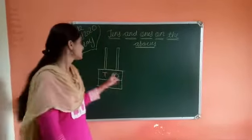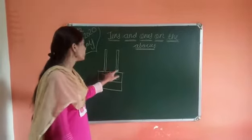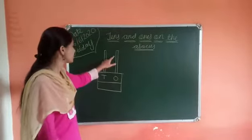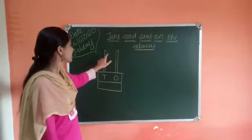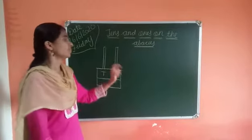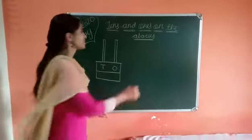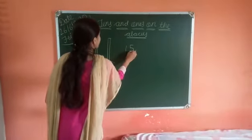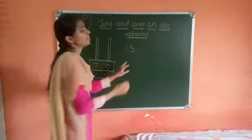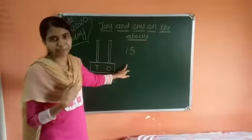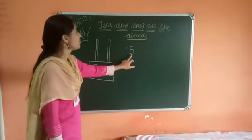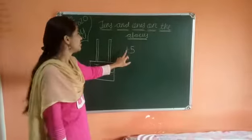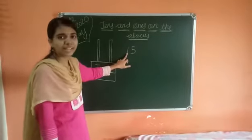This is an Abacus with 2 rods. First is the 1s rod and second is the 10s rod. For example, I have 15 marbles with me. So here 5 is on the 1s place and 1 is on the 10s place.